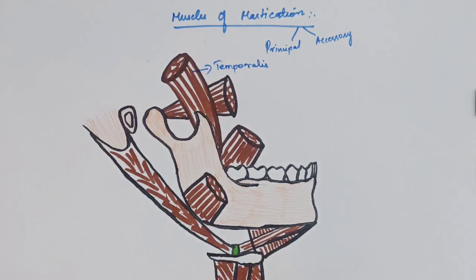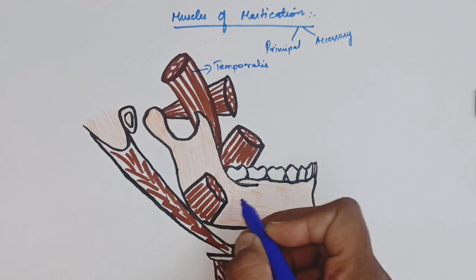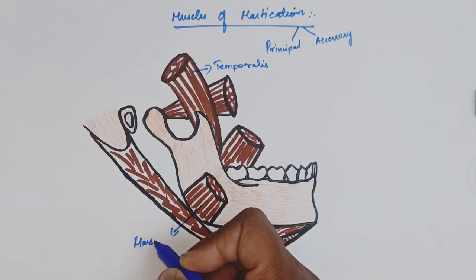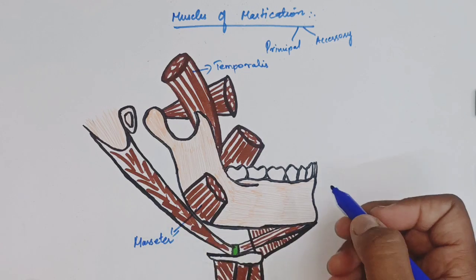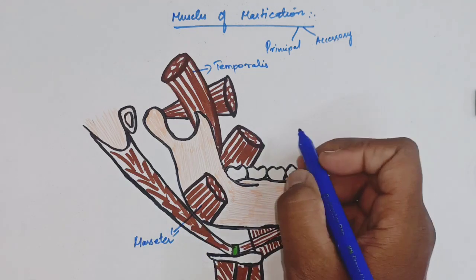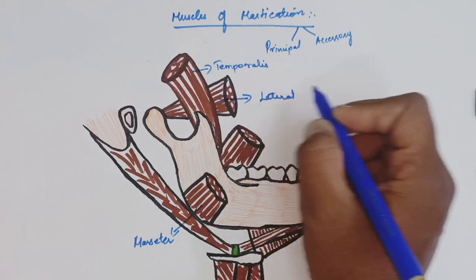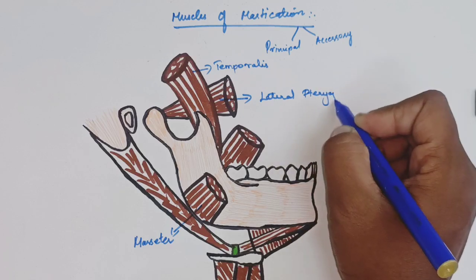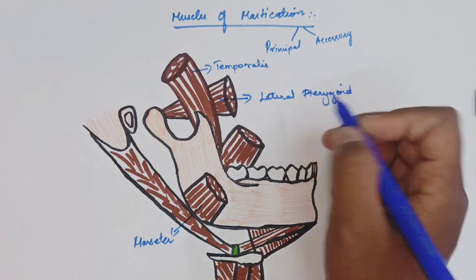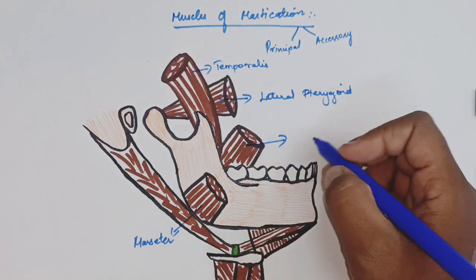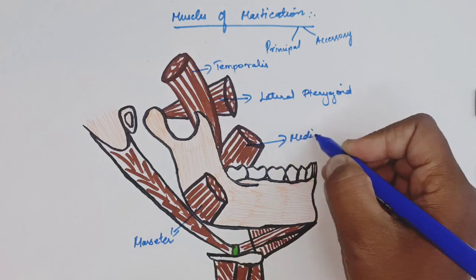This is your temporalis muscle, which is a fan-shaped muscle. The second muscle is your masseter muscle, located at the angle of the mandible region. The third muscle is the lateral pterygoid muscle, and the fourth one is your medial pterygoid muscle.